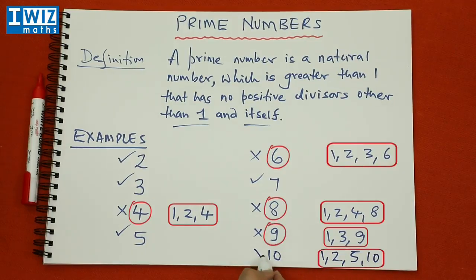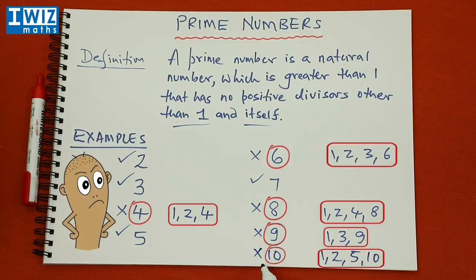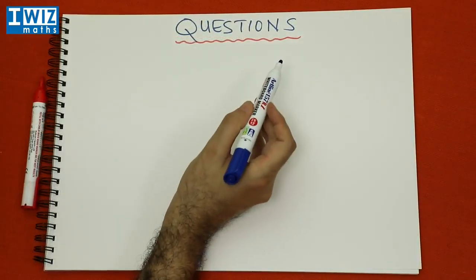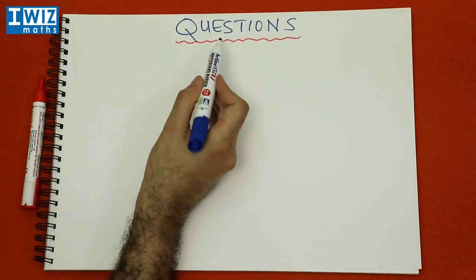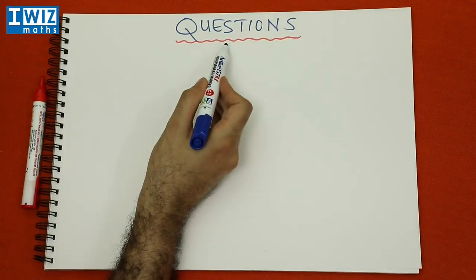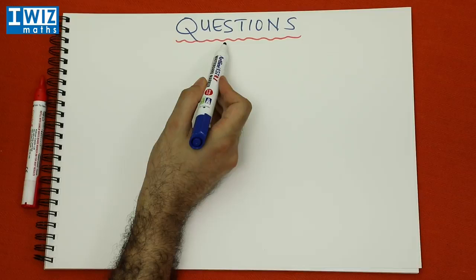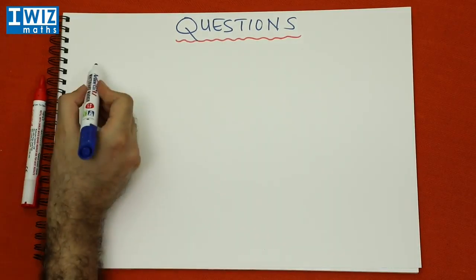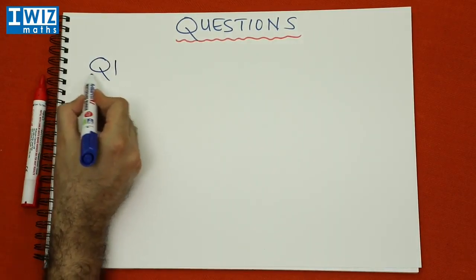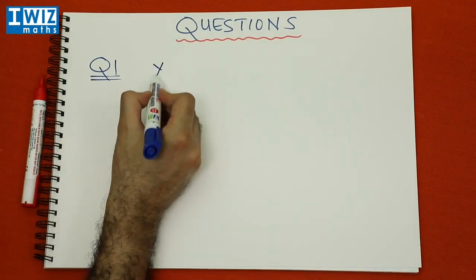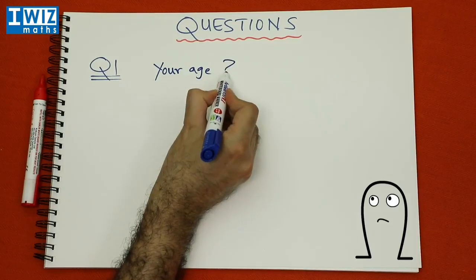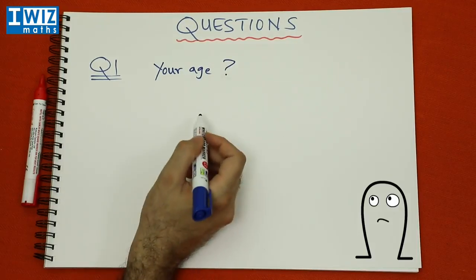Ten has divisors one, two, five, and ten, so ten is also not a prime number. The best way to get a handle on any new topic is to go through a bunch of questions yourself, so here are a few questions to deal with. Question number one: is your age a prime number or not?